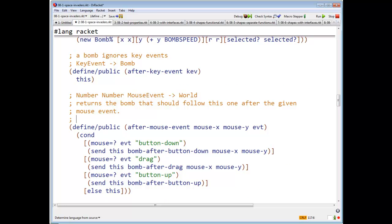So here's after mouse event, what's our strategy? So here, what am I going to do? I'm going to take a look at the mouse event, see what kind of mouse event it is, and call an appropriate method. So I'm going to have a method called BOM after button down, BOM after drag, and BOM after button up.